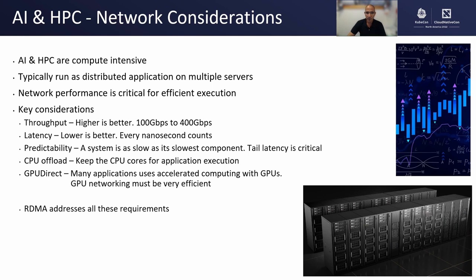Both AI and HPC are compute intensive and they typically cannot run on a single server. They require a cluster of servers and run as a distributed application. When running an application in that fashion, networking becomes a critical element for proper execution. When we look at network considerations, the first and foremost is throughput or bandwidth, and here we would like to have as much as we can. Today we're running at 100 gigabit and going forward we're already deploying 400 gigabits per second. But latency and the predictability of latency is equally important, and we would like to have low and predictable latency across all packet types.